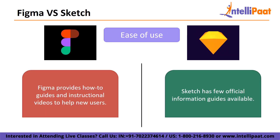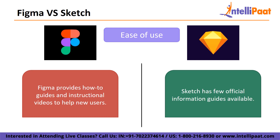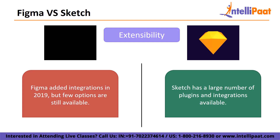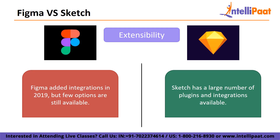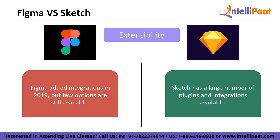Moving on to ease of use: because the two services have similar interfaces, switching between them is simple once you've learned how to use one. Figma provides how-to guides and instructional videos to help new users get up and running quickly. Sketch has fewer official information guides, but the system has been around for a long time and there is plenty of community information available. Moving on to extensibility: Figma added integrations in 2019, but few options are still available — common integration functions include prototyping, translations, animations, and developer handoff. Whereas Sketch has a large number of plugins and integrations available, comparable to WordPress's impressive theme and plugin library, driving the enhanced personalization available throughout the Sketch experience.